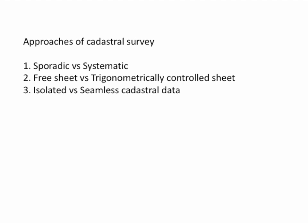Approaches of cadastral survey — this is done in two ways, both in the case of Nepal and worldwide: sporadic, which is random, and systematic. In the case of the world, it has been practiced since the 19th century, mid-19th century. In Nepal, in the year 1964 AD, the Measurement Act was launched officially, and after 1965 the cadastral and surveying work in a systematic way began. There are also two types of sheets: free sheet and trigonometrical control sheet, and cadastral data can be isolated or seamless.